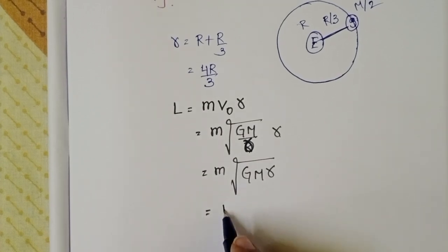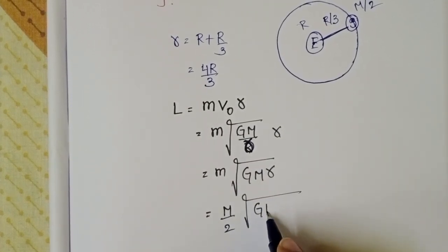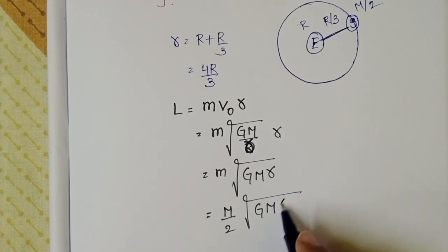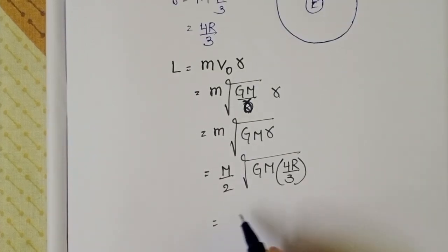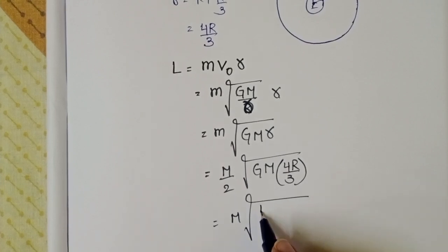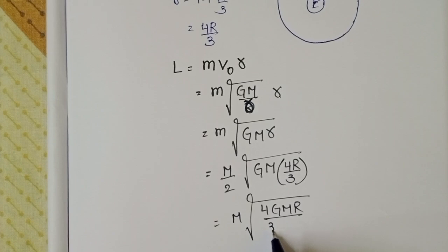Mass of the satellite is m/2. Square root of GM times distance is 4r/3. So L equals m/2 times square root of GM times 4r/3.